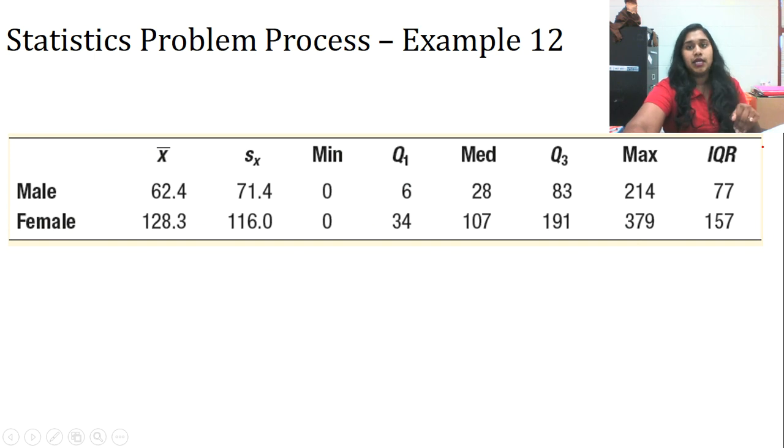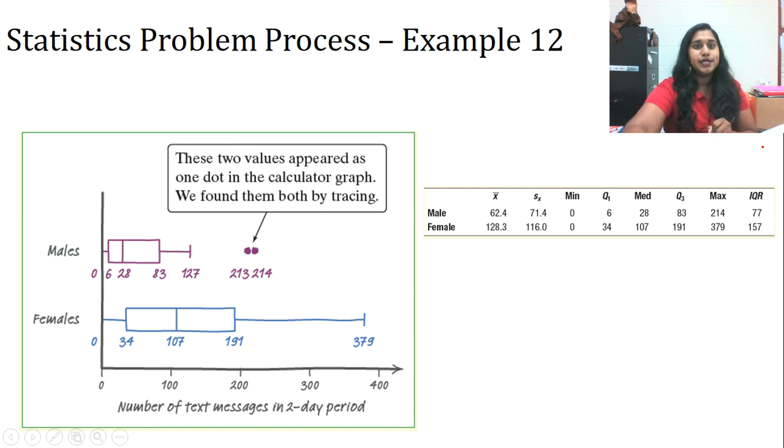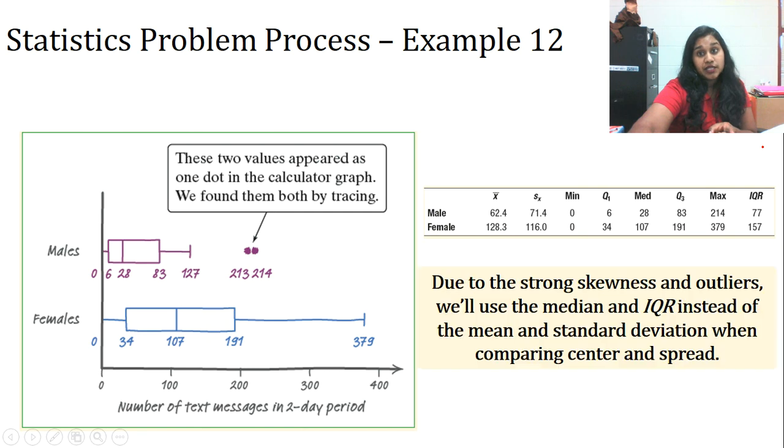All right. So, using my calculator, I got all this information. Then, using my calculator, I got an awesome little box plot. And as you can see, two of these values appeared as one dot. And we found them by tracing to separate the two values, those outlying values. Okay. Then, we can draw some conclusions just based off of this. And the conclusion is, due to the strong skewness and outliers. So, you can see crazy skewing in that female. And in the males, some crazy outliers. Due to the strong skewness and outliers, we'll use the median and IQR instead of the mean and standard deviation when comparing center and spread. Again, center and spread are based off of your data. Center and spread are based off of your data.